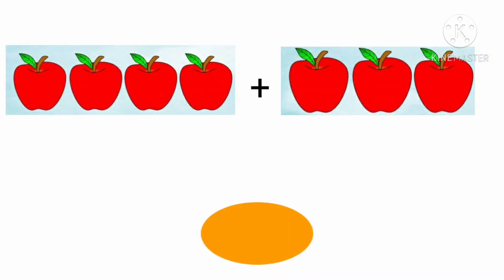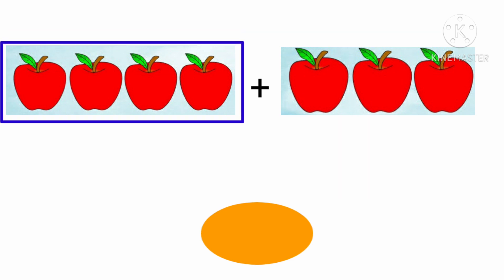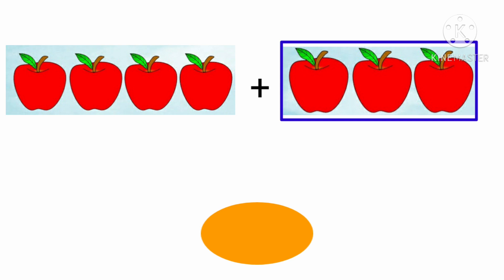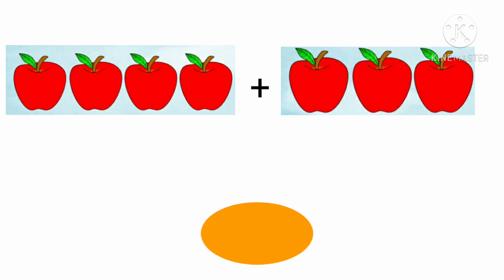So let's start. First, look at the screen and tell me what do you see. Yes, there are many apples. So let's count the apples — how many apples were there in the first box? Correct, 4 apples. Now look at the next box. How many apples are there? Nice, there are 3 apples in the second box. So how many apples altogether?